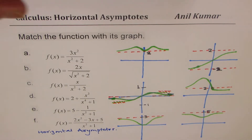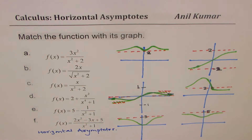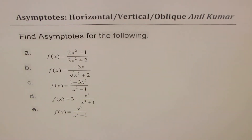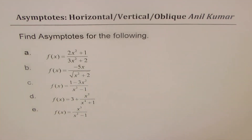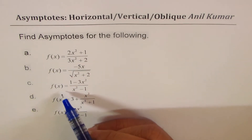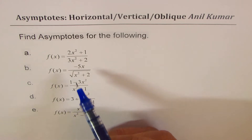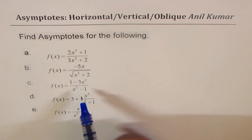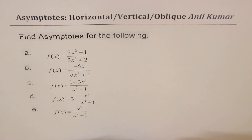We'll discuss how to find horizontal, vertical, and oblique asymptotes for any given function. We have a few more examples here, so let's discuss how to find the asymptotes when functions are given to us, and then we'll get back to our multiple choice question. There are five equations here and we'll see how to find horizontal, vertical, and oblique asymptotes for these functions.